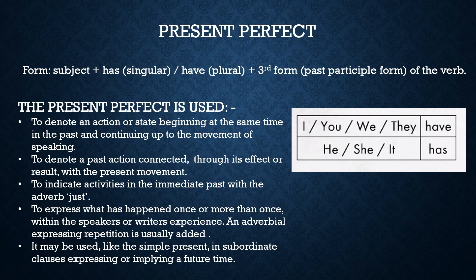We make the present perfect tense with the subject plus has (singular) or have (plural) plus the third form or past participle of the verb. For example: 'I have heard strange noises,' 'He has heard strange noises.' It is used to denote an action or state beginning at some time in the past and continuing up to the moment of speaking — for example: 'They have known each other for years,' 'We have lived here for 10 years.'